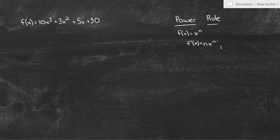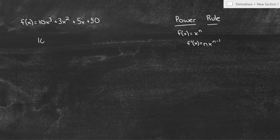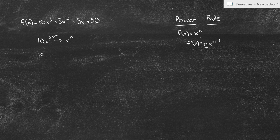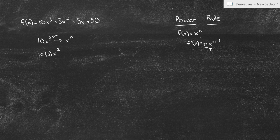We're going to start with the power rule. Here we have a function f(x) = 10x³ + 3x² + 5x + 50. The power rule says if f(x) = xⁿ, then f'(x), the derivative, is n times x to the n minus 1. So let's look at this. We've got 10x³ — think of it as x to the n. Our n is 3, because that's the exponent. So we bring the exponent out front: 10 times 3, multiplied by x, raised to n minus 1, which is 3 minus 1, or 2. So the derivative of 10x³ is 30x².